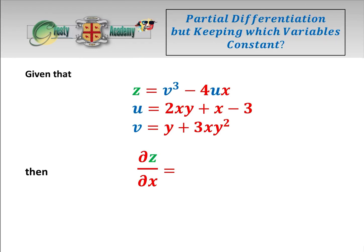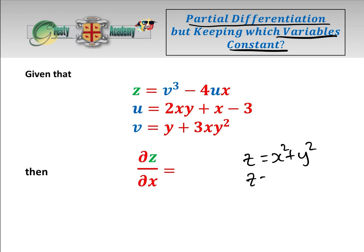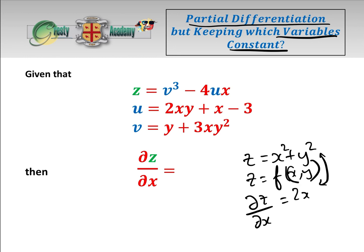Hopefully today we're going to clear up a small bit of confusion about when we partial differentiate, which variables are we keeping constant. To take a simple example: z equals x squared plus y, so z is a function of x and y. The partial derivative of z with respect to x means keep y fixed and differentiate with respect to x, so that equals 2x. There are only two independent variables and one dependent variable, so it's relatively simple.